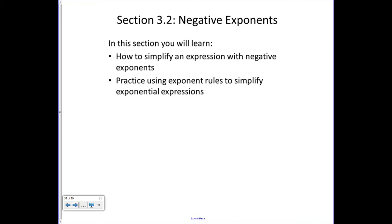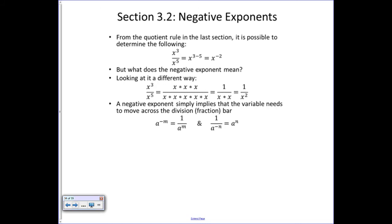From the quotient rule in the last section, it's possible to determine the following: if you've got x cubed divided by x to the fifth, that's going to be x to the three minus five, which equals x to the minus two. But what does it mean to actually have that negative exponent?